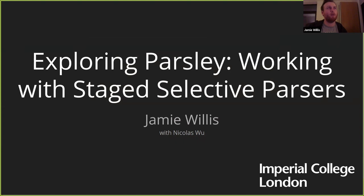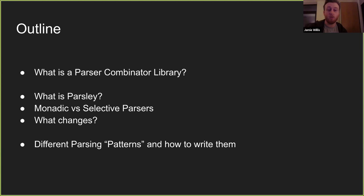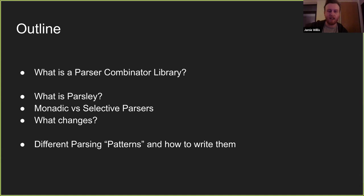Essentially, what I want to talk about today is the more practical side of my work. The outline for today is: first, what is a parser combinator library, just in case people aren't aware. Then I will introduce what Parsley is exactly — it's something called selective as opposed to monadic. Usually parser combinators are monadic, but we can't actually use that for Parsley for reasons we'll explore. I'll touch on what changes when we use Parsley versus a regular one, and then on different Parsley combinator patterns and how we actually write them.